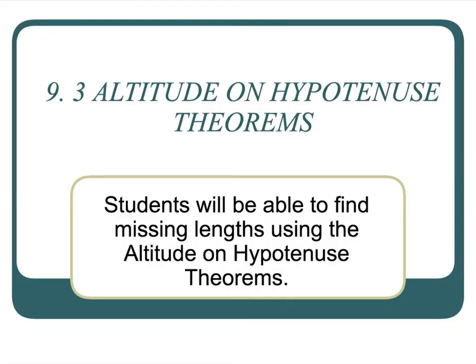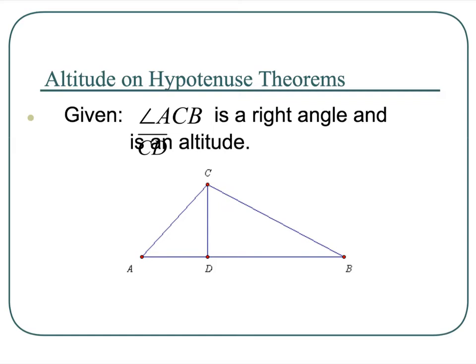Now let's get to the actual lesson. 9.3 is altitude on hypotenuse theorems. There are basically three formulas that are associated with this bad boy. So it says angle ACB is a right angle and CD is an altitude. So what we've got is that's a right angle. This is an altitude, which would mean that it is a right angle as well, right? It's perpendicular, an altitude.